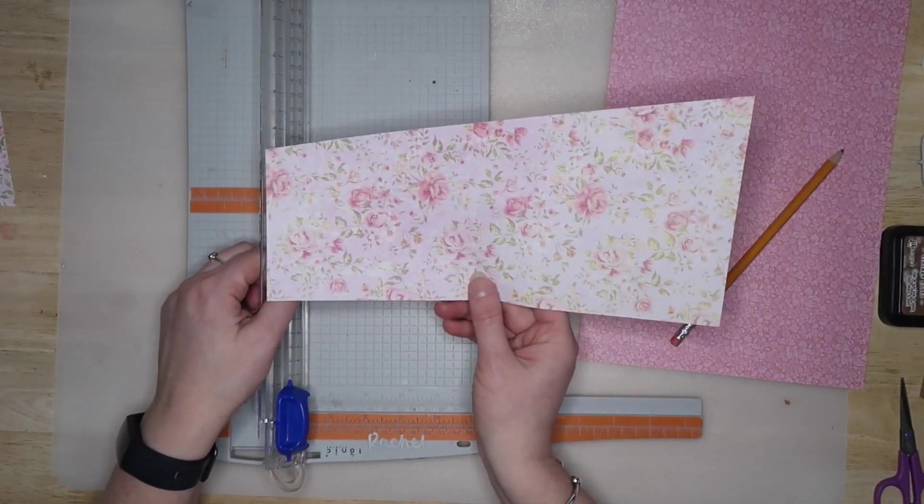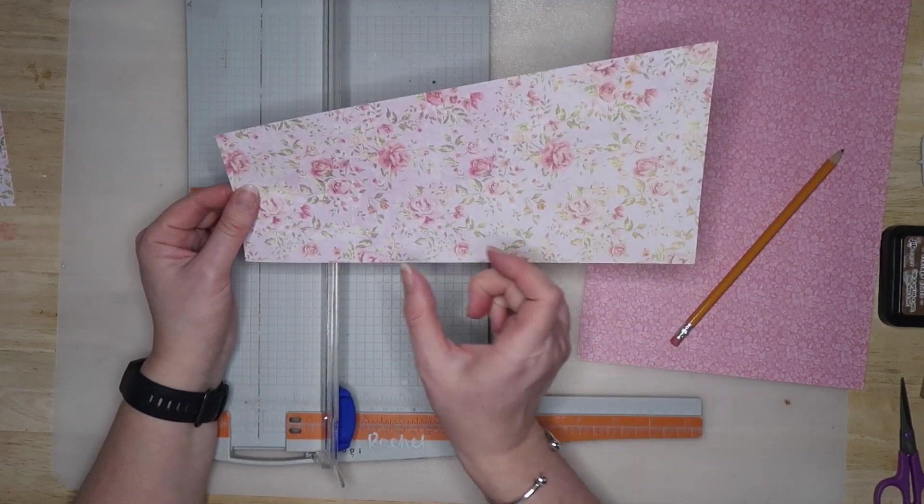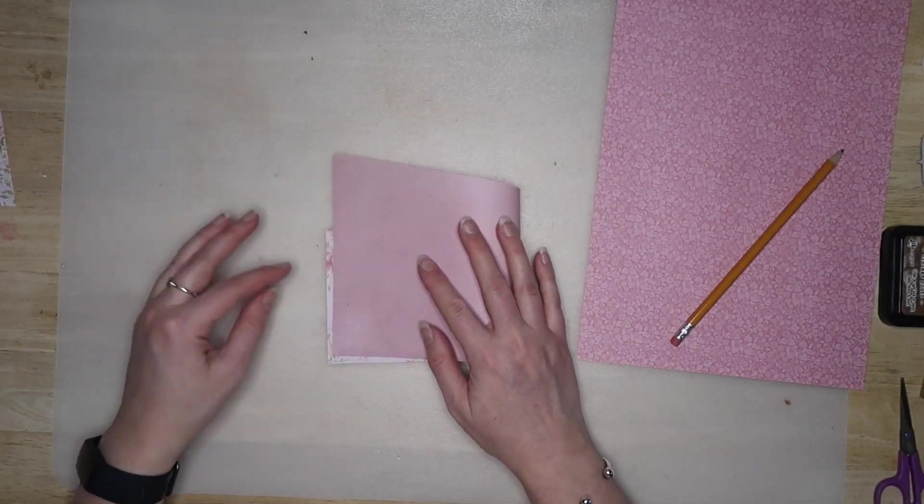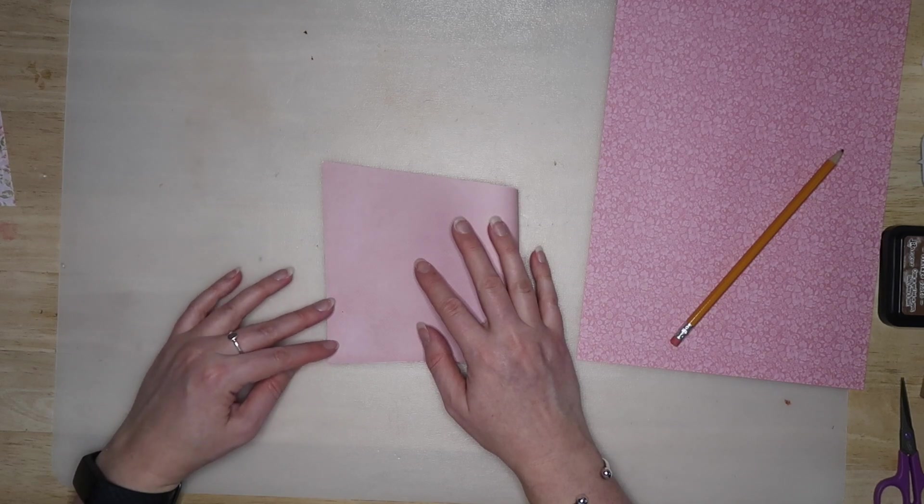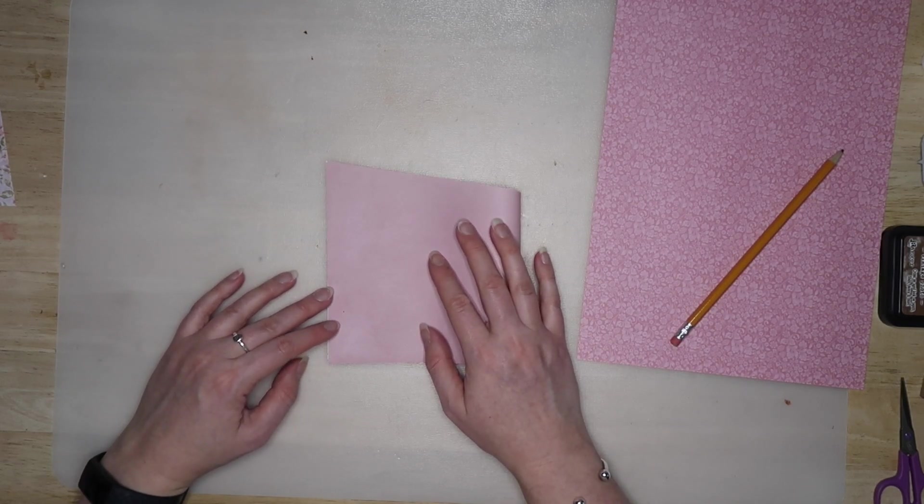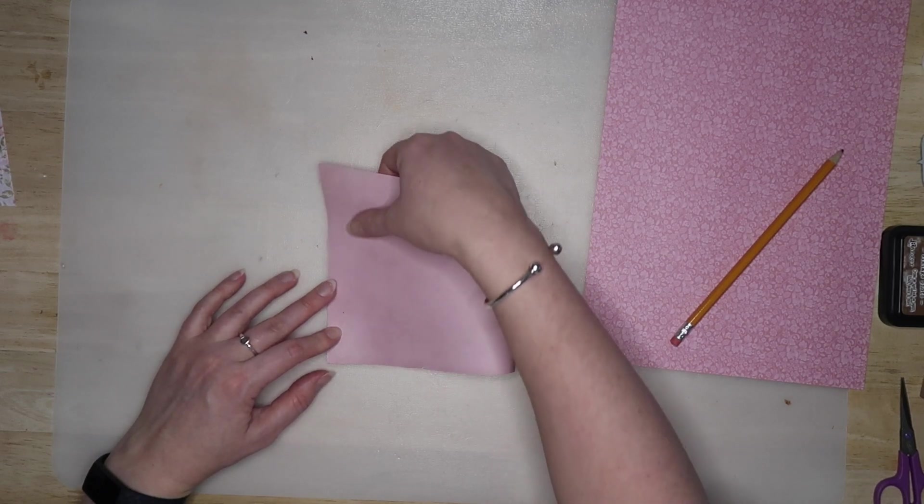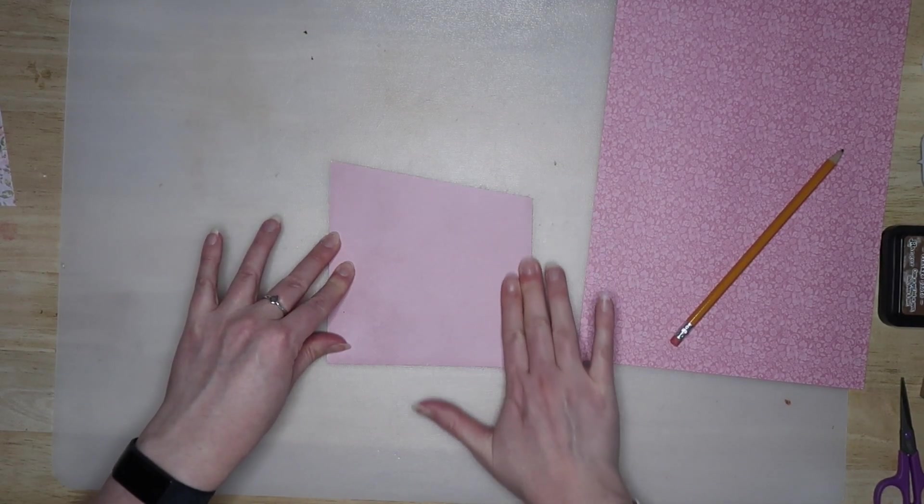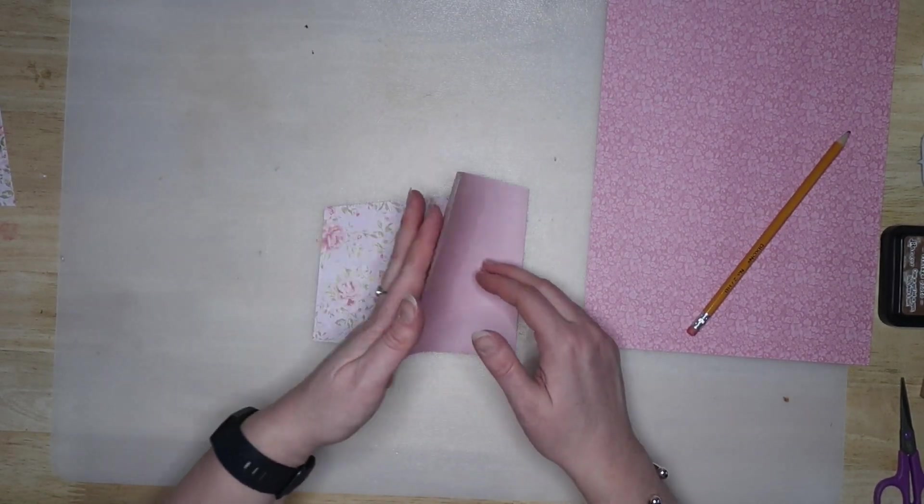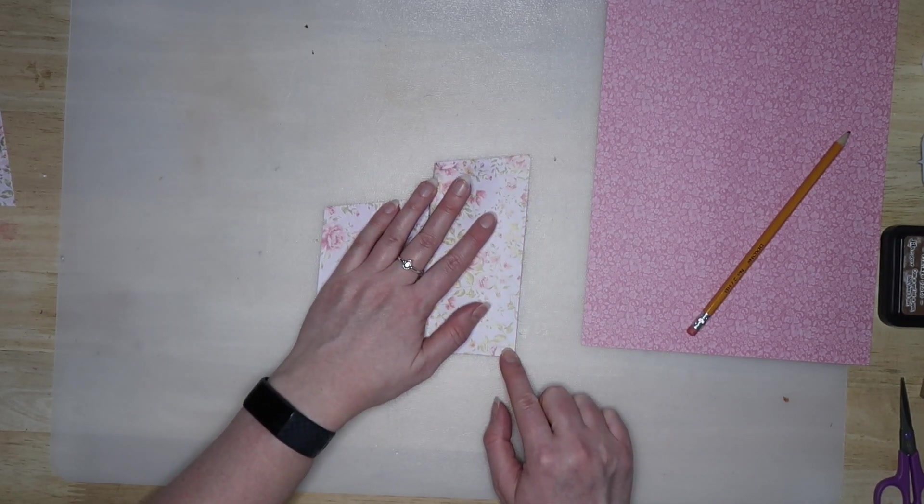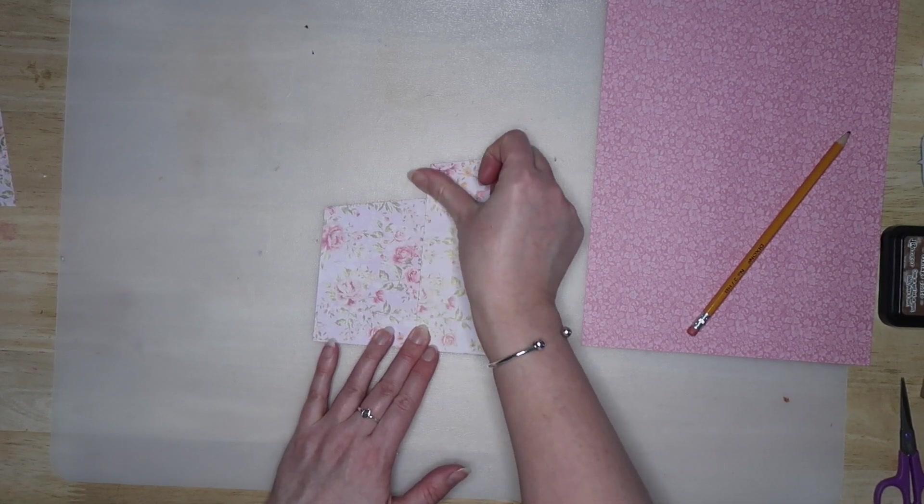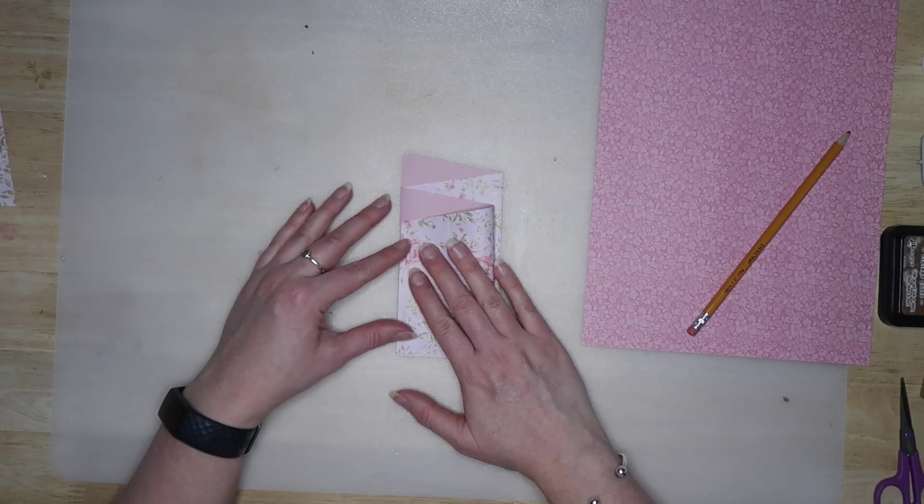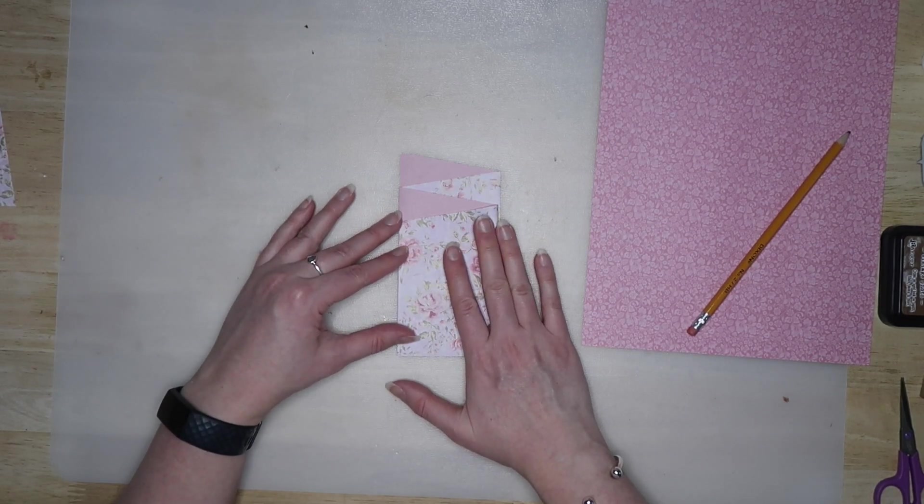Now we need to fold this piece into four sections equally and instead of scoring that I'm just going to fold it because this paper's thin and I think that it can cope. So I'm just lining those straight edges up as best I can and then fold them down. So one fold in the middle and then we fold back on ourselves like that.